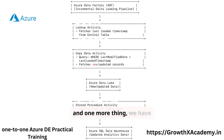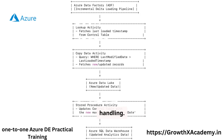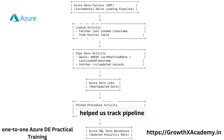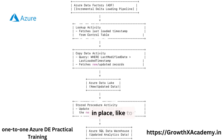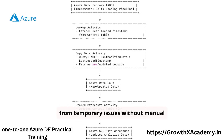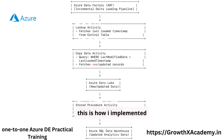We also added monitoring and error handling. ADF's built-in monitoring tools helped us track pipeline runs, and we set up alerts to notify the team in case of failures. We also implemented retry logic to ensure the pipeline could recover from temporary issues without manual intervention. And that's how I implemented incremental loading with ADF.